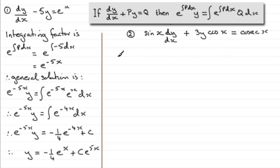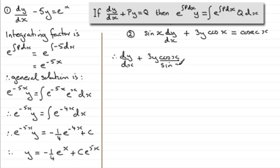Dividing each term by sin(x): the first term gives dy/dx, the second term gives plus 3y·cos(x) over sin(x). I'll leave it like that rather than changing it to cot(x). And on the right-hand side, cosec(x) is 1 over sin(x), and dividing that by another sin(x) gives 1 over sin squared x.